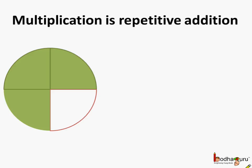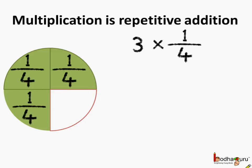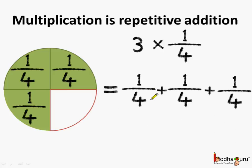We know multiplication is repetitive addition. So in case of fractions, what is 3 times 1 fourth? It is 3 multiplied by 1/4. If we see this as addition — adding 1/4 three times — then 1/4 plus 1/4 plus 1/4 is equal to 3/4.